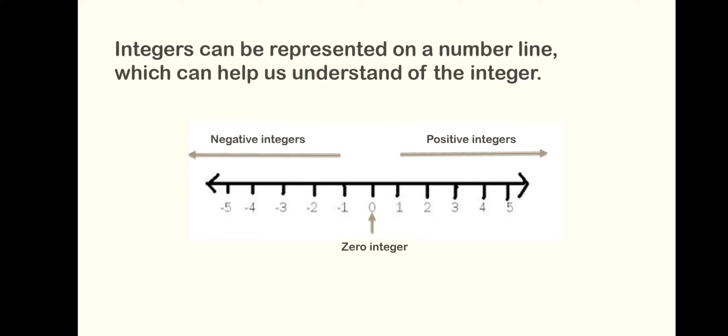Positive integers are to the right of zero. The sign for positive integer is plus. Negative integers are to the left of zero. The sign for a negative integer is minus.